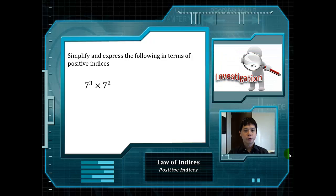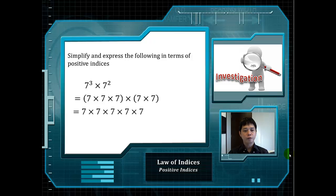7 cubed multiplied by 7 squared. We learned previously that 7 cubed is actually 7 multiplied by 7 multiplied by 7, and 7 squared is simply 7 multiplied by 7. If we remove the brackets, it will look like this. And hence, what is the final answer after simplification? It will be 7 to the power of 5.